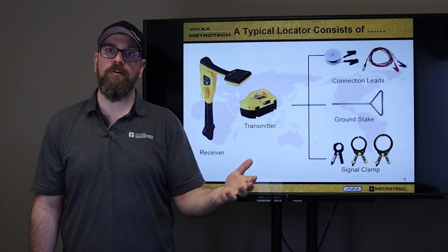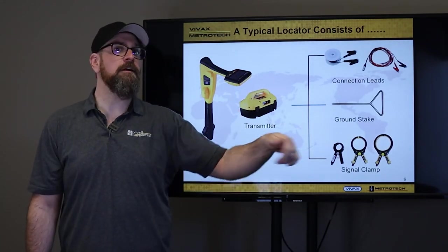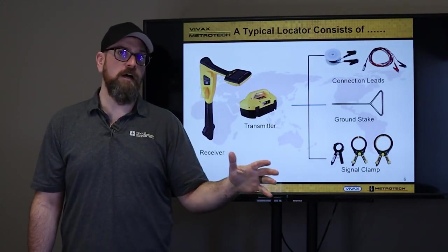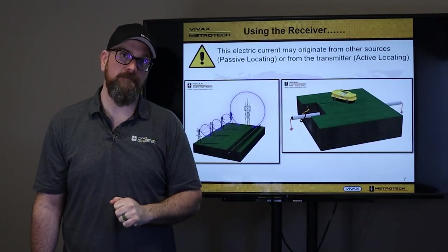So, typical locate set, receiver, transmitter, set of leads, ground stake, and a signal clamp. Common stuff that most folks will have in their locate set.